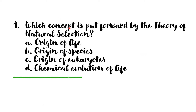Which concept is put forward by the theory of natural selection? The options include origin of life, origin of eukaryotes, and chemical evolution of life. The answer is: natural selection puts forward the concept of the origin of species.